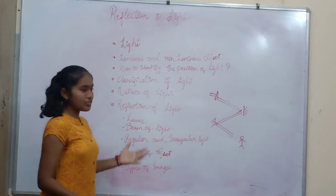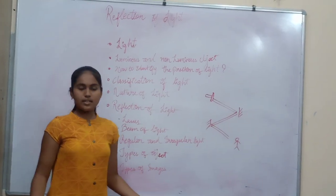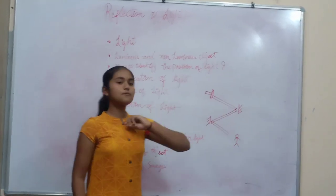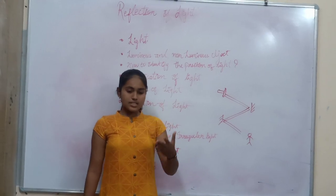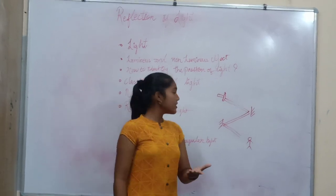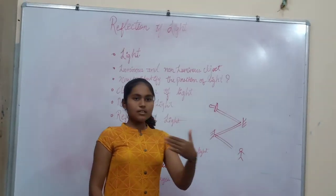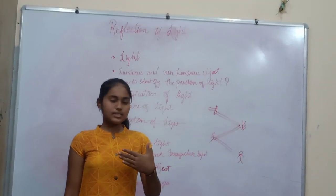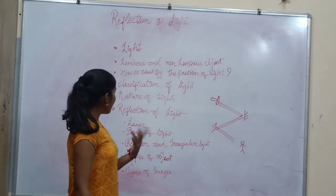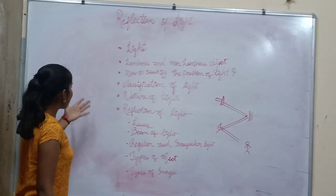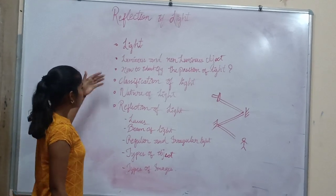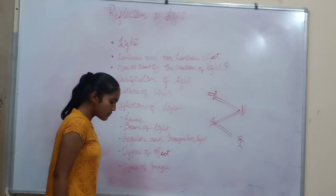The position cannot be determined from a far distance. We can determine it only at a little distance. Now let's move to the next topic — that is the classification of light.